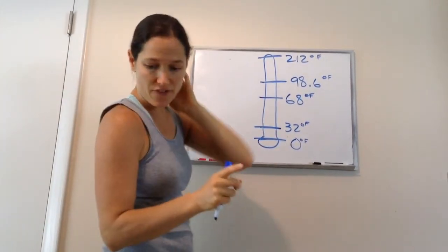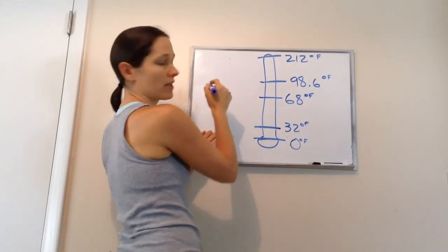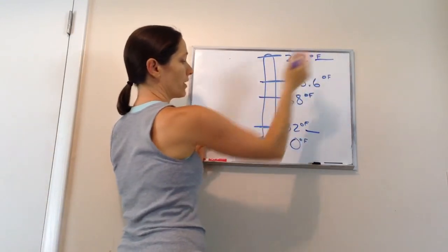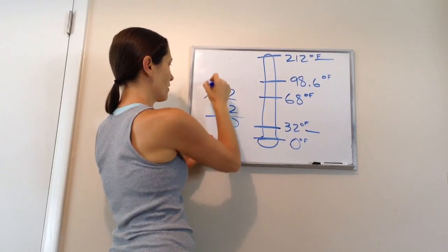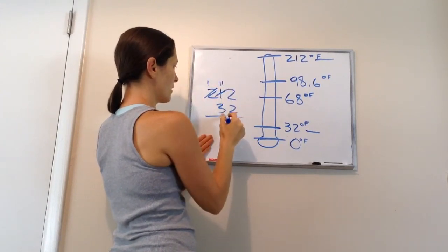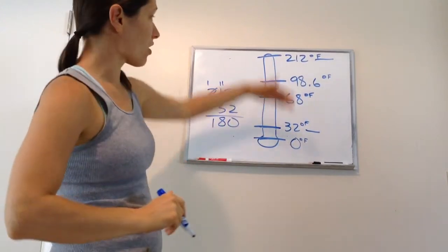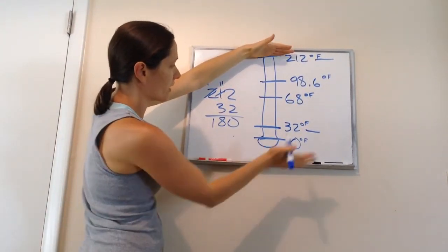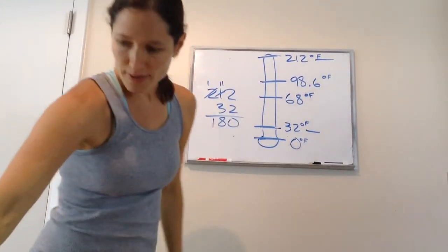So, what is the difference between, how many degrees is between freezing and boiling? Freezing, boiling. How much degrees is in between that? Well, let's do the math. 180. So, there are 180 degrees from boiling to freezing. 180 degrees. Got it? That is lesson 16.